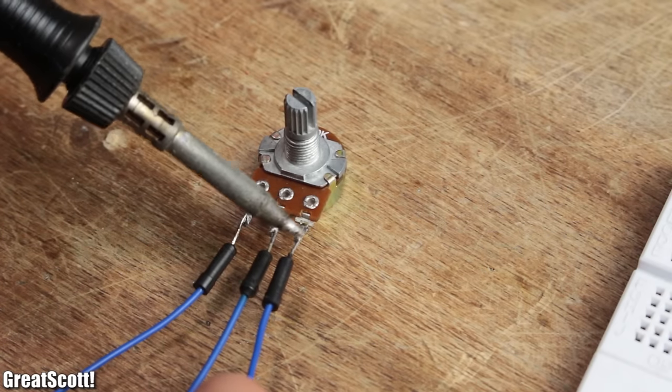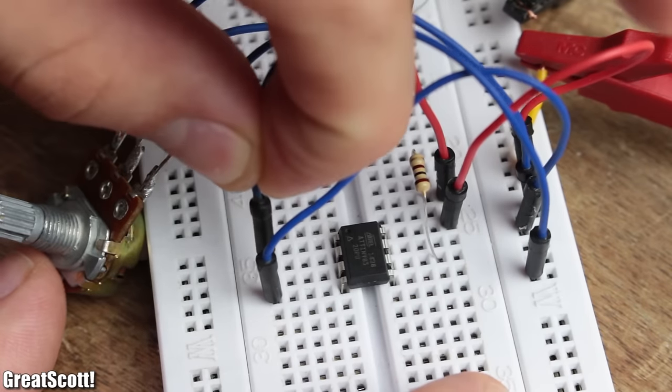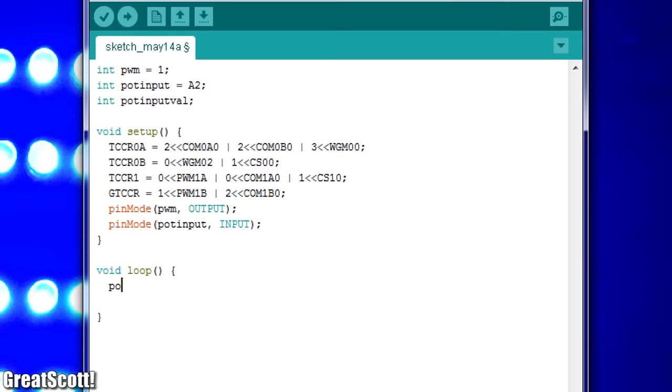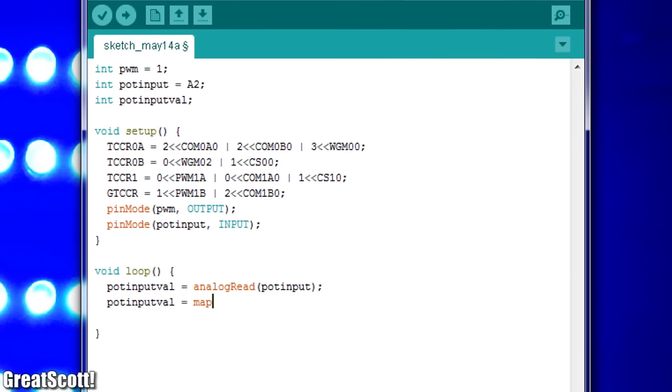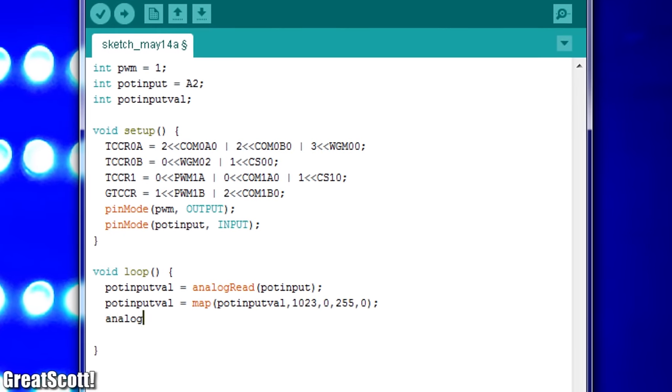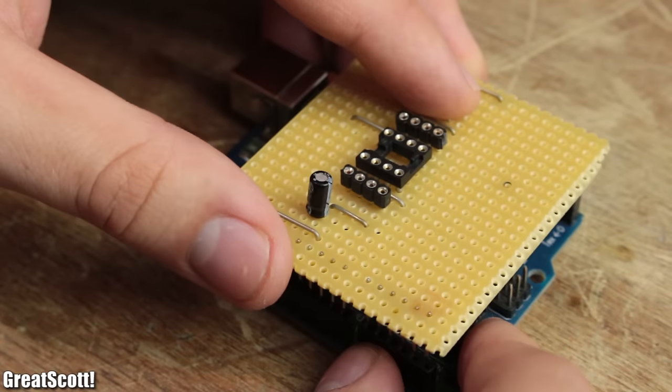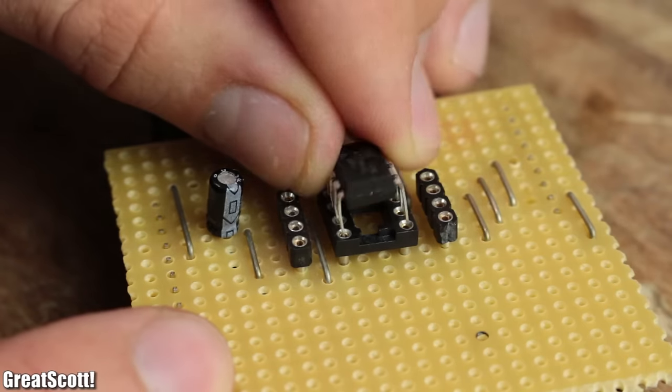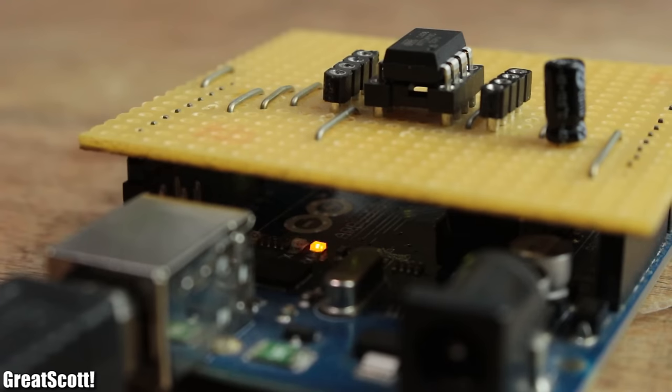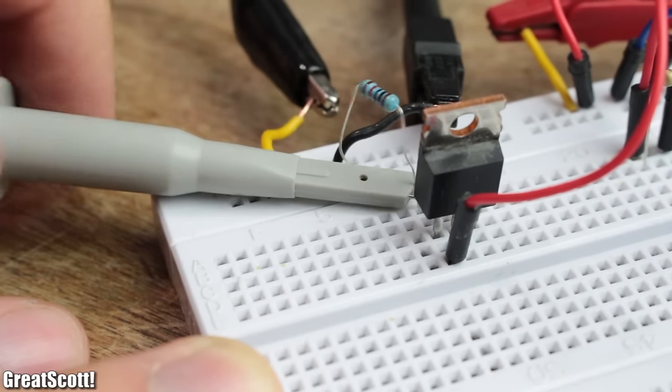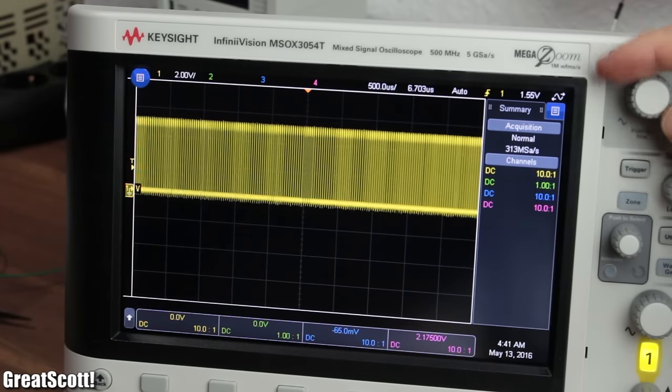I also added a potentiometer on analog input A2 of the microcontroller, which I can use in the code to change the duty cycle of the PWM signal. To program the ATtiny, I used my homemade programming shield from a previous video. Now I'm capable of turning the MOSFET switch on and off rapidly with a frequency of 32.5 kilohertz.